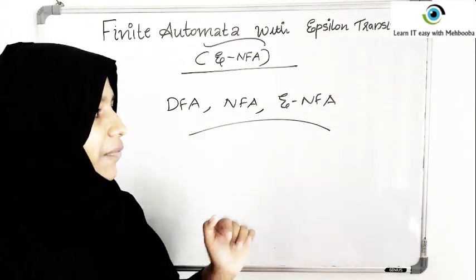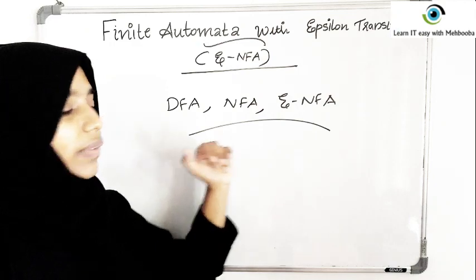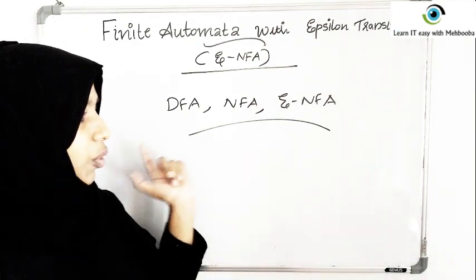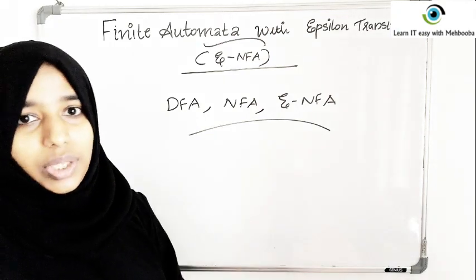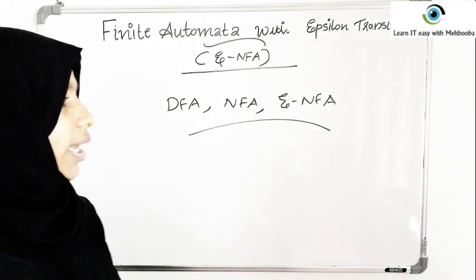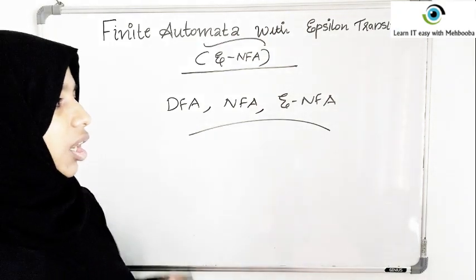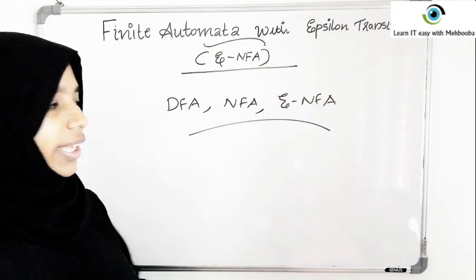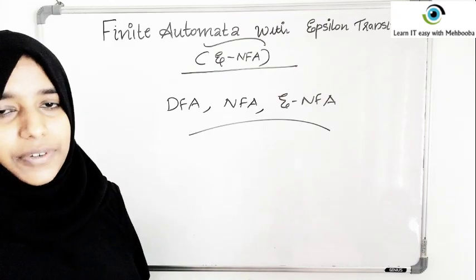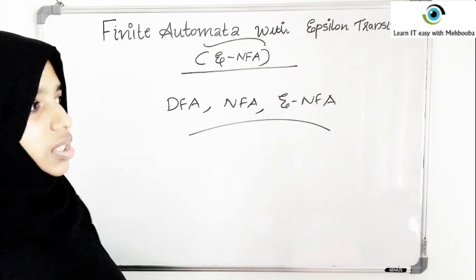Both have the same processing power, but the difference is that in some cases drawing an epsilon NFA is much easier compared to drawing an NFA or DFA, and in some cases drawing an NFA is easier than drawing a DFA. That is the only difference, and that is why we have all these models.